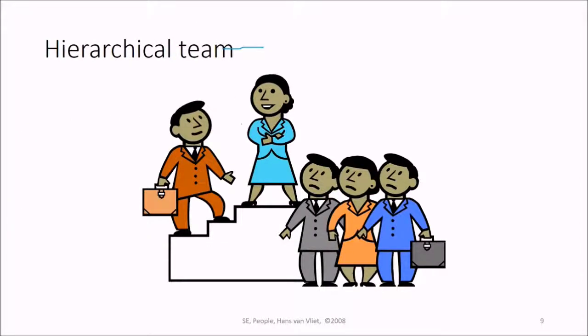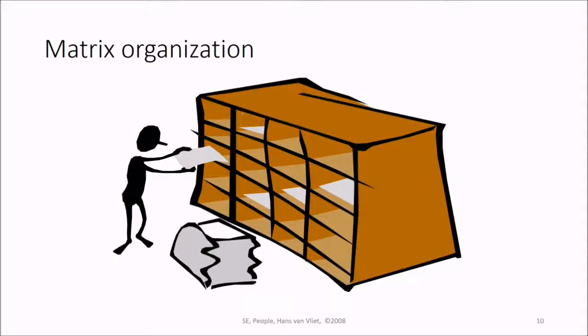This is the hierarchical team: one level, second hierarchy, third hierarchy. Matrix organization is different - no hierarchy is there, but people still know what kind of job they're supposed to do.